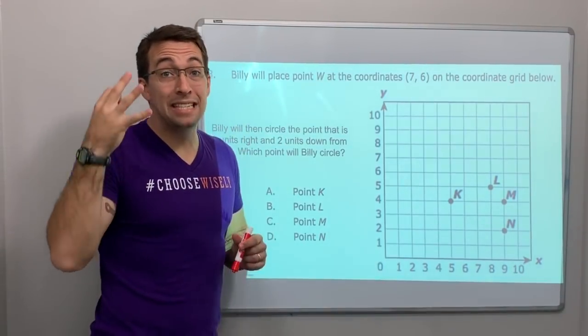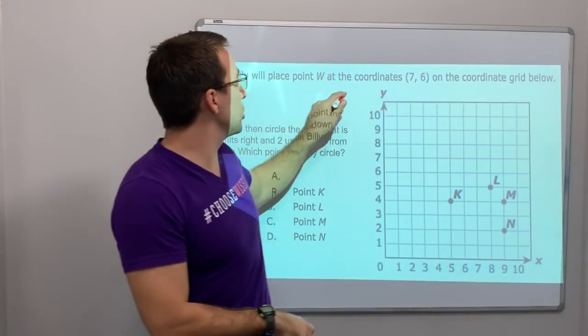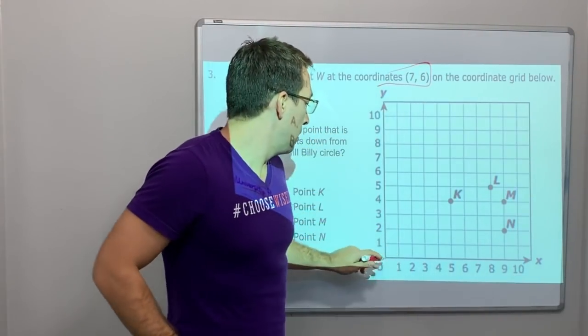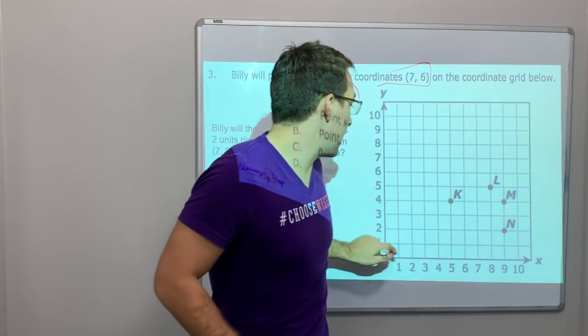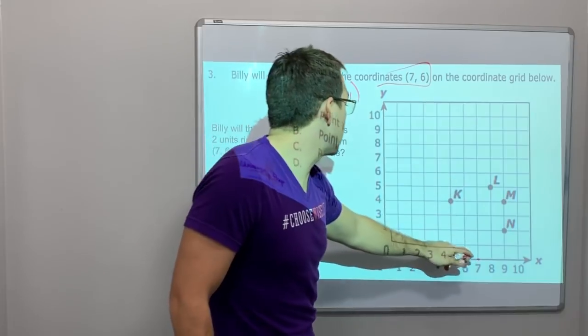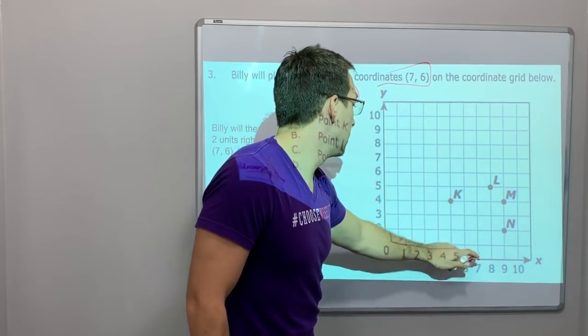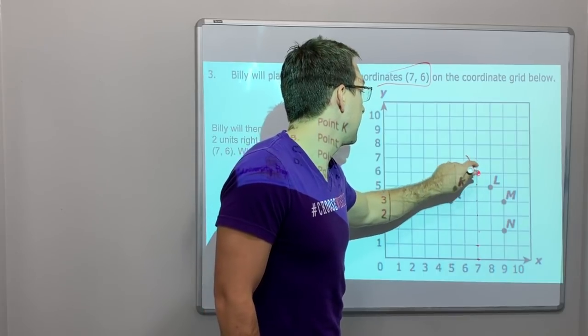Okay, Billy will place W at the coordinate seven, six. Okay? So let's just do seven, six really quick. X comes before Y. X and then Y. So we'll do seven on the X, one, two, three, four, five, six. Seven and then six. So go all the way up to six. One, two, three, four, five, six. That is W.